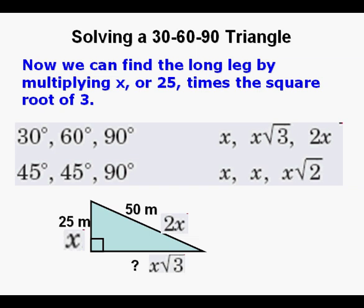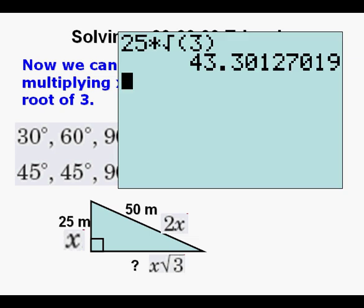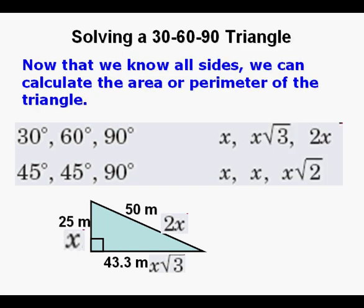Now we can find the long leg by multiplying x or 25 times the √3. Here we do that and we get 43.3 as our long leg. Now that we know all sides, we can calculate the area or perimeter of the triangle.